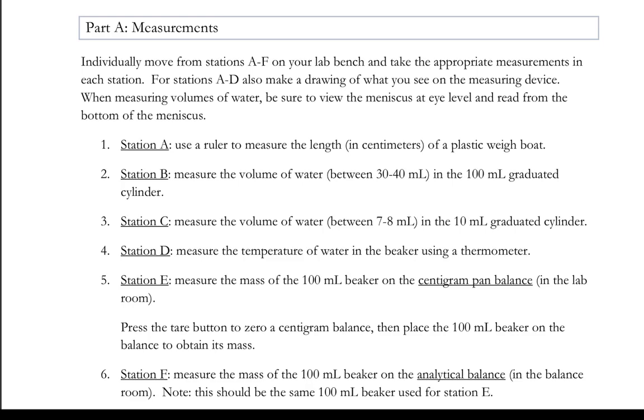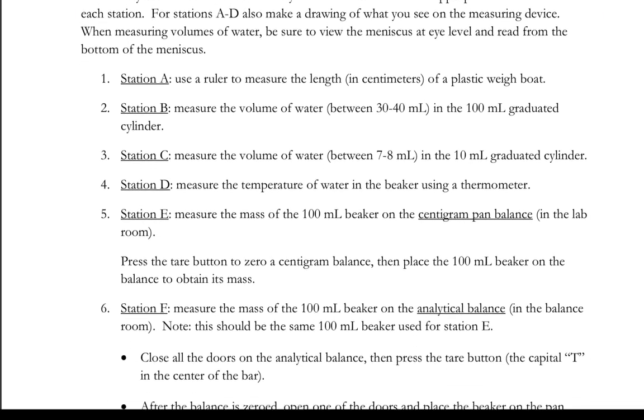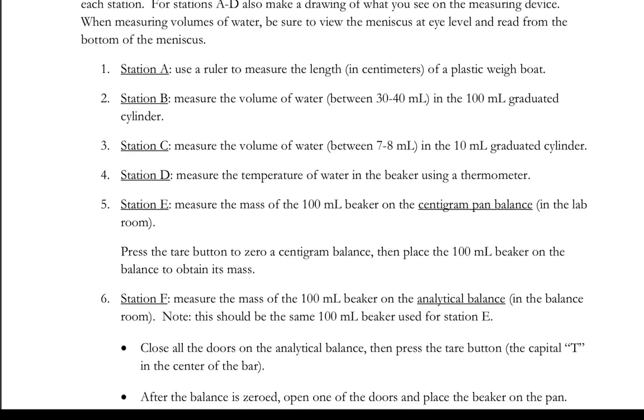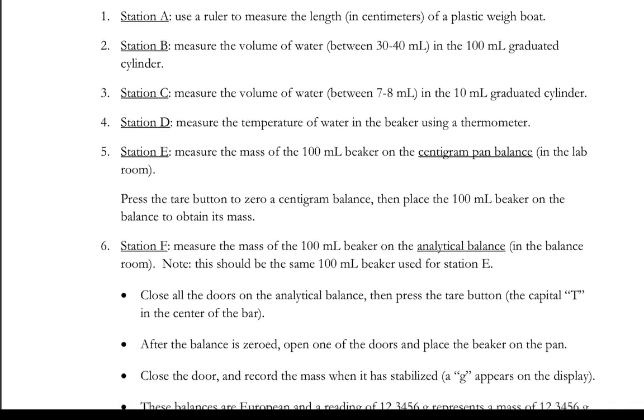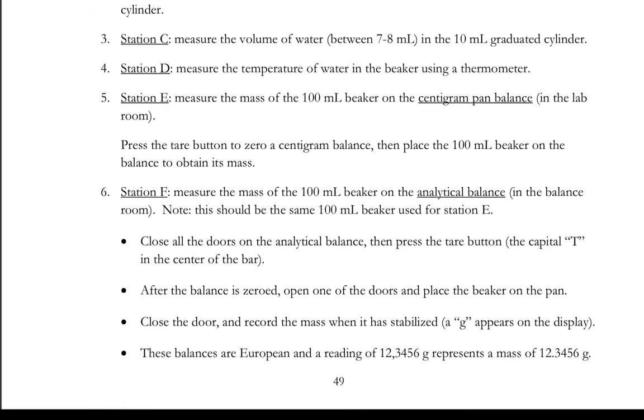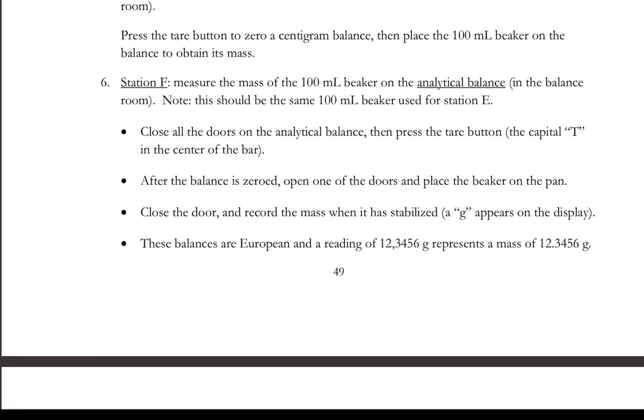Station D, we're measuring with a thermometer. Station E, we're measuring using a balance to measure mass. It gives us two decimals, we simply write those down. In station F, we are measuring the mass of an object using the analytical balance which gives us four decimals, so we definitely write all them down.